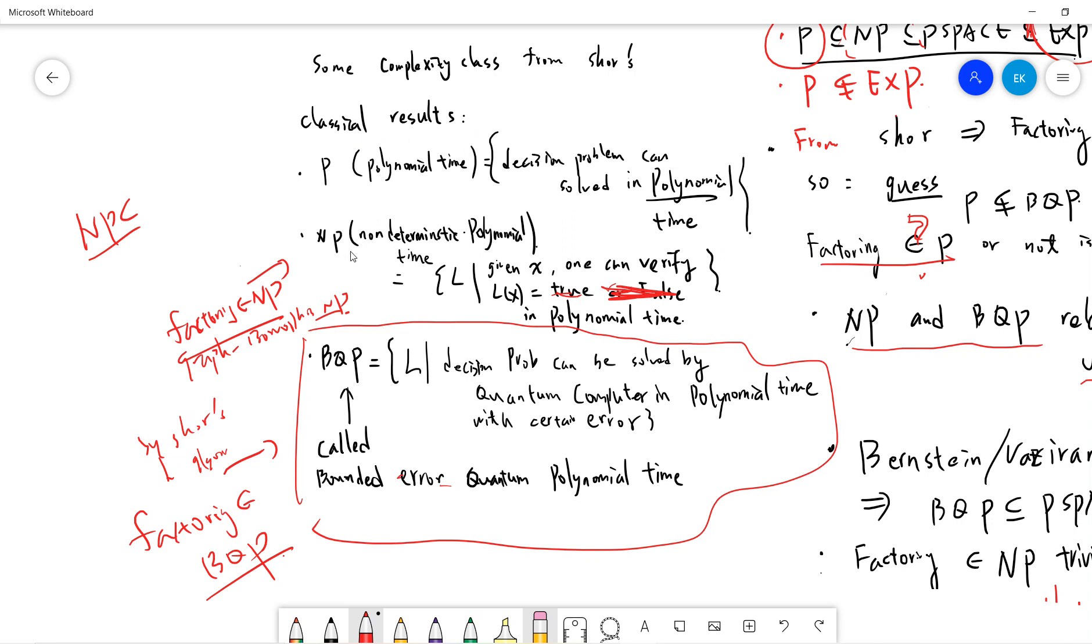And there is NP called non-deterministic polynomial time. It means the set of decision problems where given x, one can verify L(x) is true in polynomial time. Basically most of the problems are in NP.